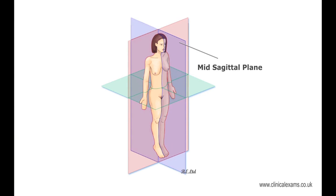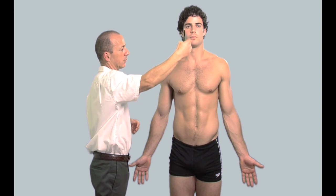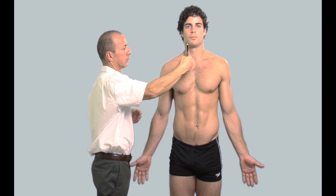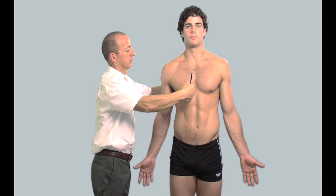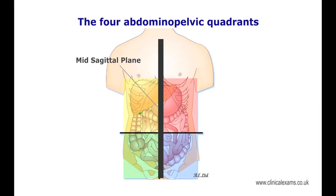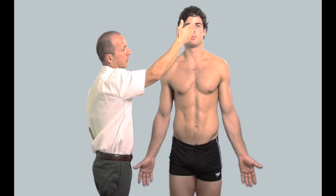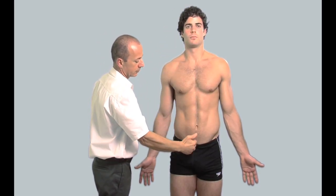Location of structures are often described in relation to the anatomical planes. The mid-sagittal plane is marked by a vertical line running in an antero-posterior direction, dividing the body into equal and near-symmetrical left and right halves. This line runs through the centre of the nose, the sternum and the symphysis pubis.